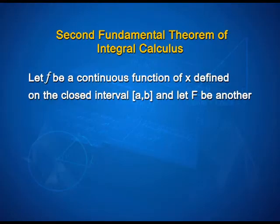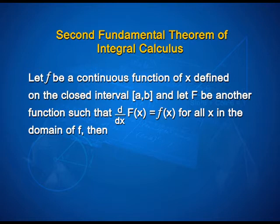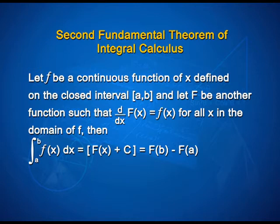The second fundamental theorem of integral calculus says that: let f be a continuous function of x defined on the closed interval [a, b], and let F be another function such that d/dx of F(x) = f(x) for all x in the domain of f. Then integral from a to b of f(x) dx = [F(x) + c] from a to b, which equals F(b) − F(a). This is called the definite integral of f over the range [a, b], where a and b are called the limits of integration — a being the lower limit and b the upper limit.